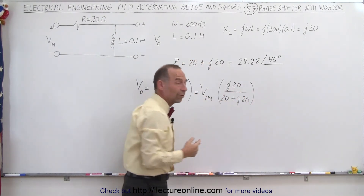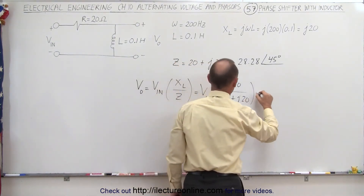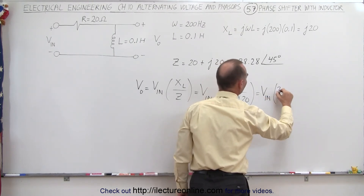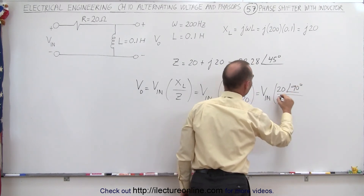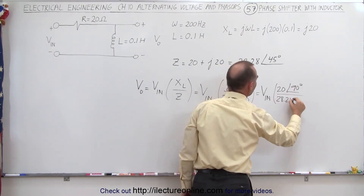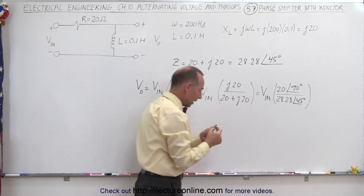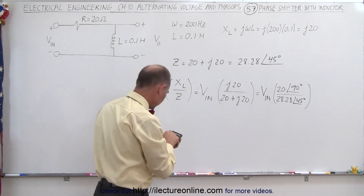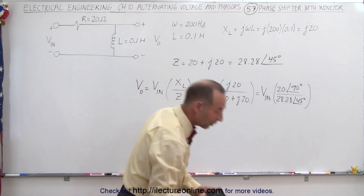Of course it makes a lot more sense to put that into magnitude and angle format so we can do the division. This will be equal to the input voltage times the ratio of a magnitude of 20 with a positive angle of 90 degrees, divided by a magnitude of 28.28 with an angle of 45 degrees. Now we divide — taking the inverse of 28.28 times 20 — and that is indeed 0.707.